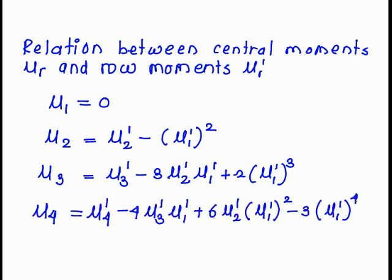mu 4 is equal to mu 4 dash minus 4 mu 3 dash times mu 1 dash plus 6 mu 2 dash times mu 1 dash square minus 3 times mu 1 dash raised to 4.